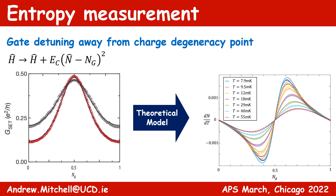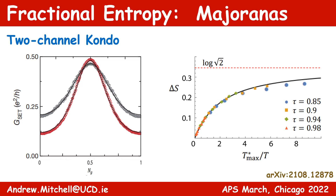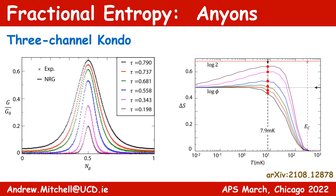The required charge measurements have not yet been made on such critical Kondo systems. Therefore, we take an alternative approach in which we use our theoretical model to find a relationship between the experimentally measured conductance and the charge across a Coulomb peak, which in turn allows us to access the entropy via the Maxwell relation. In the two-channel case, the conductance-charge relation can be derived analytically, and by re-examining existing transport data from the experiments, we can see a clear scaling of the extracted entropy towards the critical fractional value of log√2.